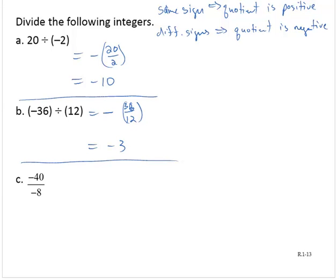Negative 40 divided by negative 8, again. Well, these have same signs, so I'll write a little positive here just for effect. But I'm just thinking, what's 40 divided by 8? 40 divided by 8 is 5, so positive 5. And we don't write the positive.